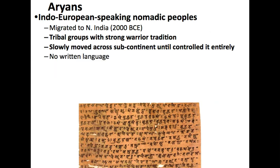The next group we're going to talk about is the Aryans. The Aryans are a group of nomadic people, similar to a lot of groups that we've talked about — the original Arabs were nomadic, the Berbers were nomadic, and so on. But this group is speaking a different language — it's Indo-European-based. These people came from Central Asia, skirting around the Himalayas and making their way into northern India. They were little tribal groups with a strong warrior tradition, meaning they had a lot of skill when it came to combat, and they slowly but surely moved across the subcontinent until they controlled pretty much all of the people there.